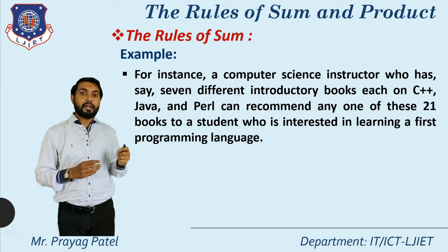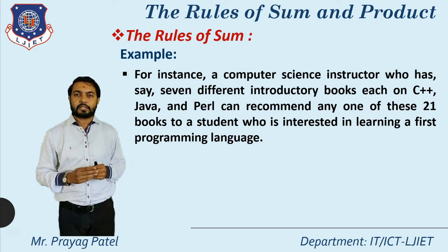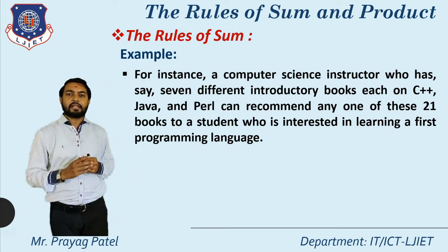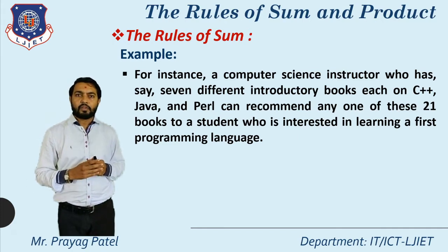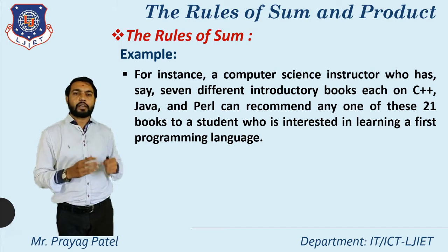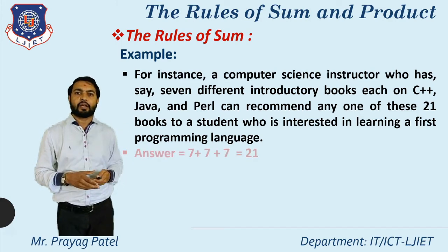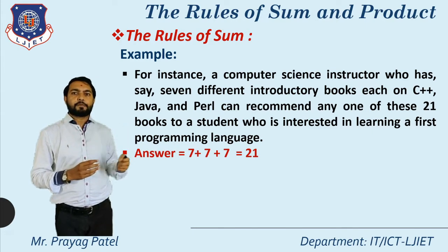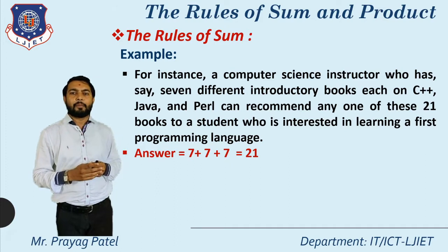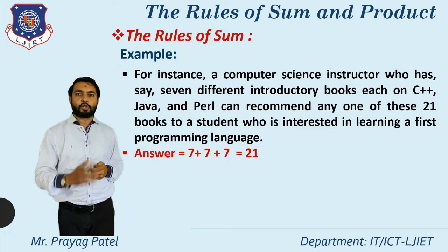The next example: a computer science instructor has seven different introductory books each on C++, Java, and Perl — so we have three subjects and for each subject we have seven books. The total number of books available is seven plus seven plus seven equal to 21. So if a student wants to select any one book from any programming language subject, the total choices equal 21 ways.